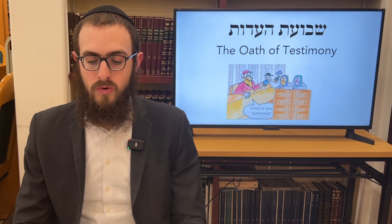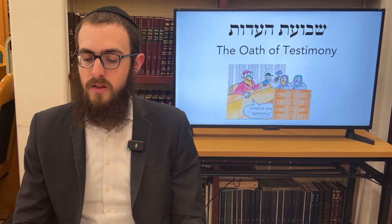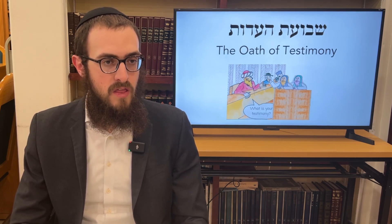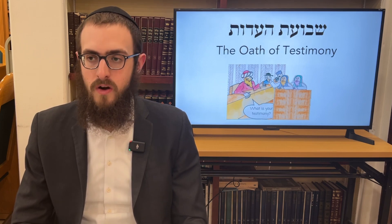This is where they incur the liability of Shvua Ha'edus — having sworn falsely over testimony. As we learned yesterday, there are ten conditions to create the ideal situation for a testimony oath to be powerful enough to hold you liable. Today we're going to briefly touch on the character of the witnesses themselves, but then mainly focus on one of the ten conditions: Eidus Mamayin.